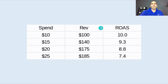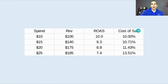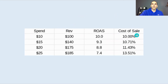So the goal is not to maximize just how much revenue we bring in — the goal is to maximize how much profit we can bring in. That's where we look at another term: COS, or cost of sale, which is simply the inverse of return on ad spend. Cost of sale is spend divided by revenue. I'm going to add another column into this spreadsheet — cost of sale — so instead of doing revenue divided by spend to get ROAS, I'm taking spend divided by revenue to give us the cost of sale.